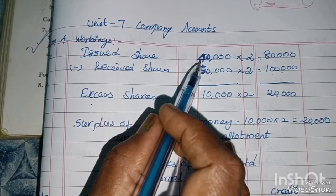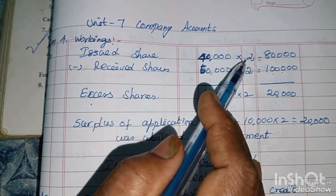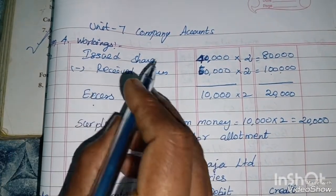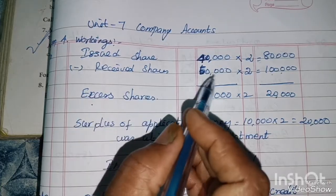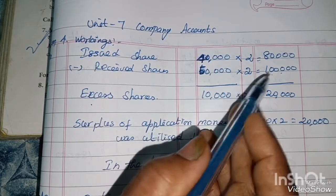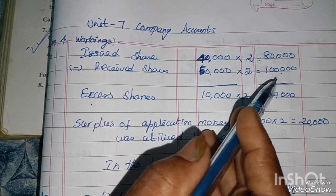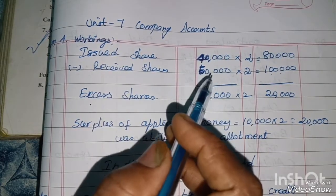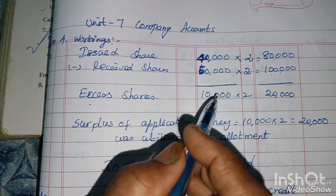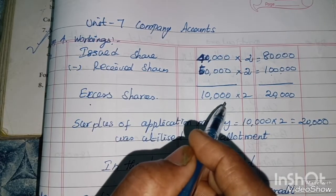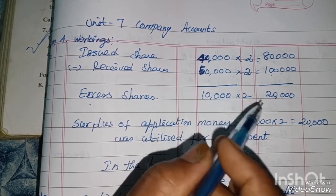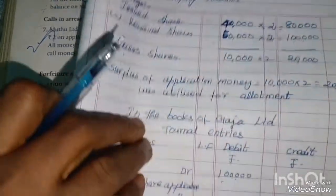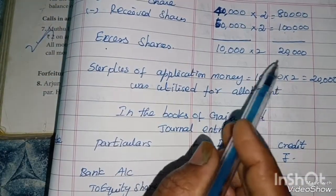The issued shares are 40,000. The application money received: 50,000 shares into Rs.2 equals Rs.1,00,000. Excess shares: 50,000 minus 40,000 equals 10,000 shares are excess. That is the excess application money: 10,000 into Rs.2 equals Rs.20,000. The surplus of application money is Rs.20,000.